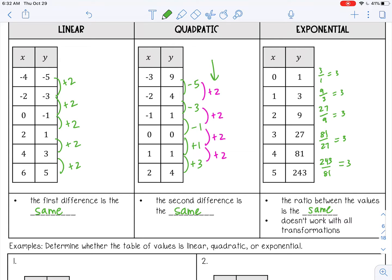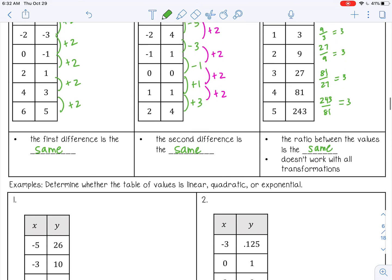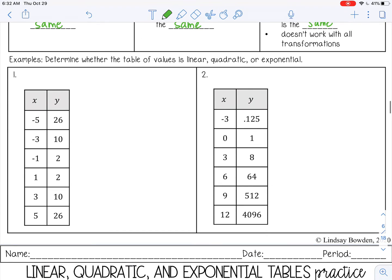Okay, so let's try these two at the bottom. Determine whether the table is linear, quadratic, or exponential. So let's check our x values first and make sure they are evenly spaced. Let's see: negative 5, negative 3, negative 1, 1, 3, 5. If they're not, just get rid of the ones that are evenly spaced. Let's say I had a 0 in here—you just wouldn't use that when you're determining the function type.